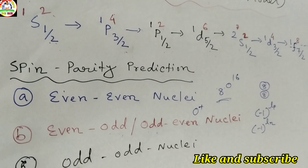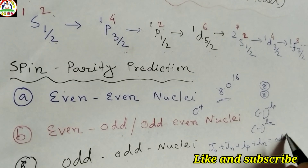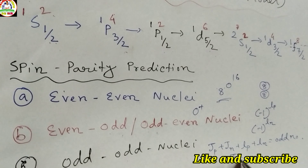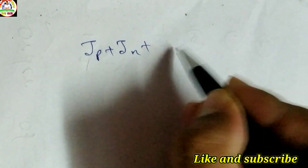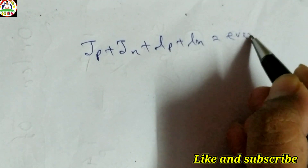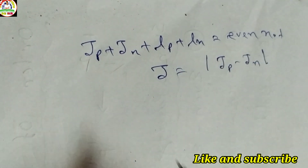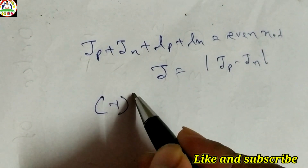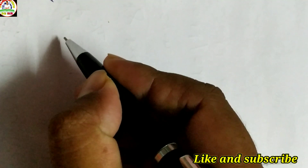For odd-odd nuclei, if the angular momentum of the proton J_P, the angular momentum of the neutron J_N, and the L values of both proton and neutron are odd numbers, then the total angular momentum J equals J_P plus J_N. If J_P plus J_N plus L_P plus L_N is an even number, then total angular momentum J equals J_P minus J_N. The parity is always (-1)^(L_P + L_N). You must remember this rule.